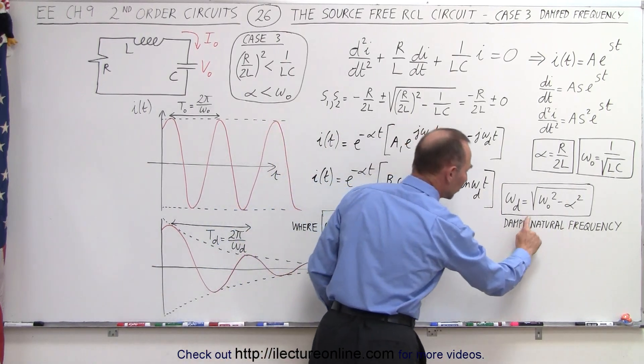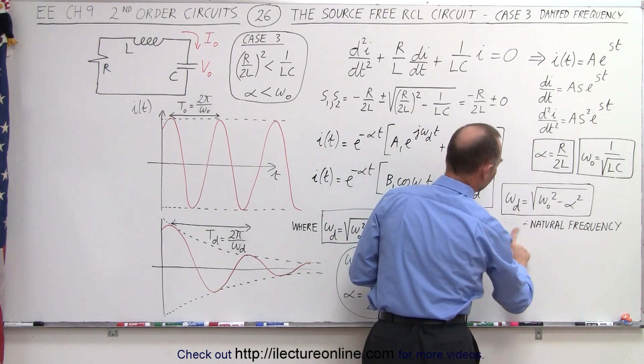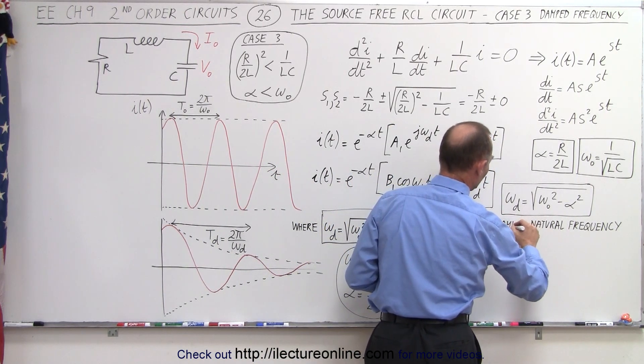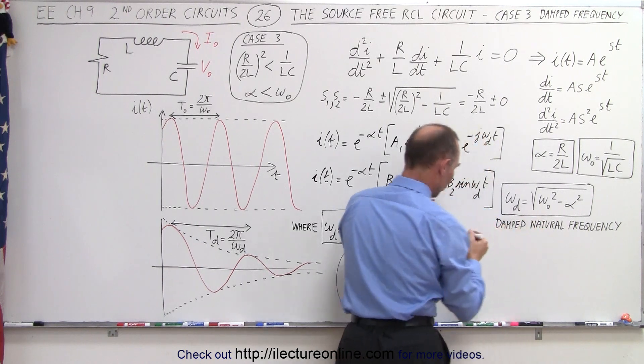Now, omega sub d is what we call the damped natural frequency. Notice it's defined as the square root of the natural frequency squared minus the damping factor squared.